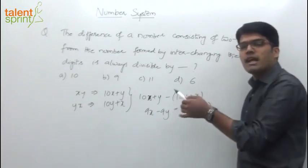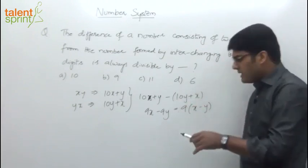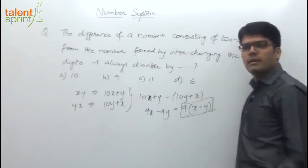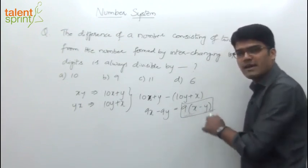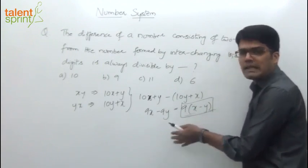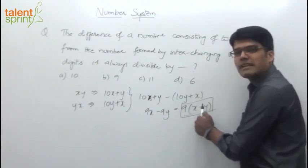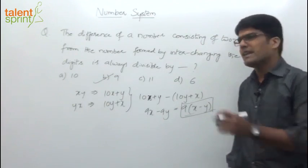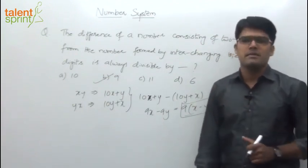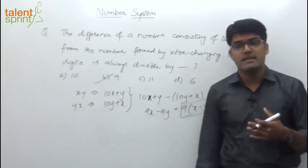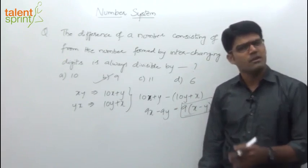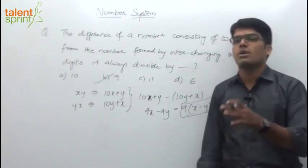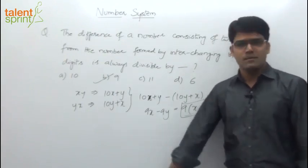So basically, the difference of the two-digit number and its interchanged number is equal to 9 times (x minus y). This result is always divisible by 9, because clearly 9 is a factor outside. So you can always divide this difference by 9 — whatever the digits, it is going to be a multiple of 9. Hence we can say this difference is always divisible by 9. This is a standard result — it is always divisible by 9. So if the same question appears in the exam, you must know that for two-digit numbers, the difference of the original and interchanged number is always divisible by 9, or is always a multiple of 9.